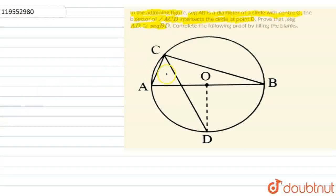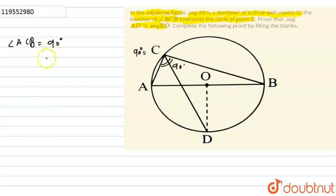First of all, here we have to look at the angle. This angle is at the center — which is the diameter and which is the center. Angle ACB is equal to 90 degrees. This is the 90-degree angle. Angle ACB equals 90 degrees because of the angle in a semicircle, because it is a diameter. So ACB is a semicircle and the angle is 90 degrees — hence it is an angle in a semicircle.